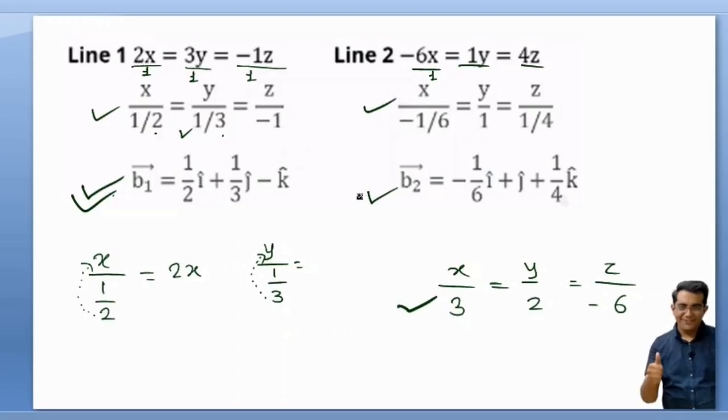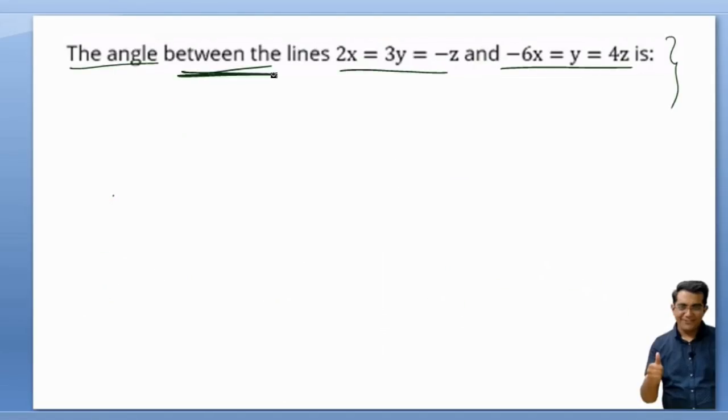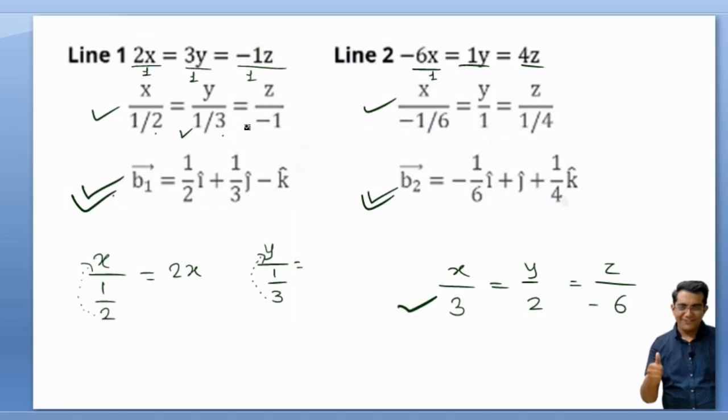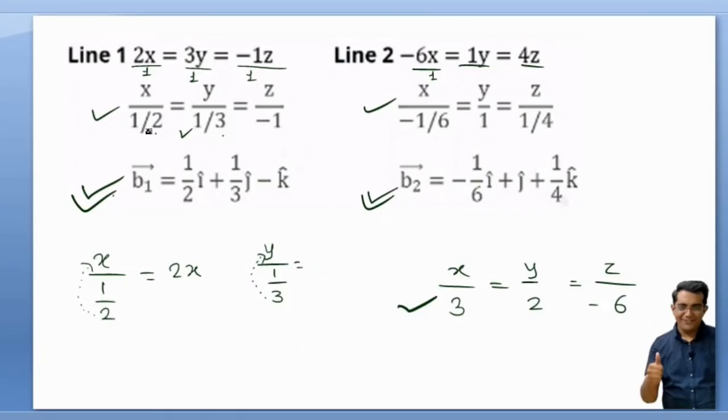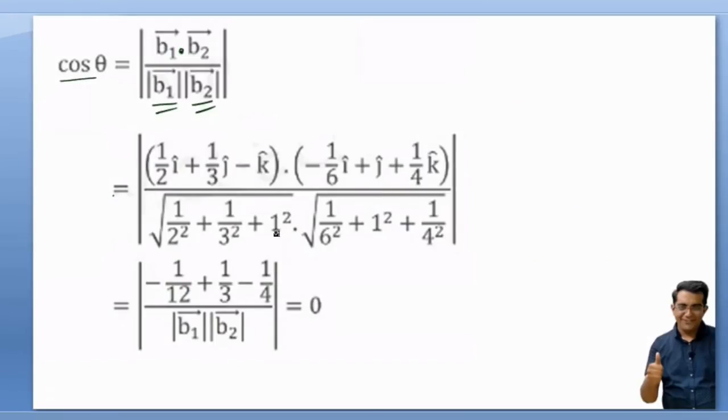Here also I have divided numerator and denominator by -6, I got like this. So the second vector is b2. Now they are asking for angle between two lines, and the formula for angle between two lines is cos θ = b1 · b2 / |b1||b2|. So b1's magnitude would be like 1/2 squared plus 1/3 squared plus -1 squared, we would get the value.